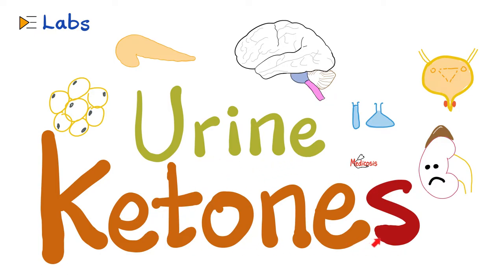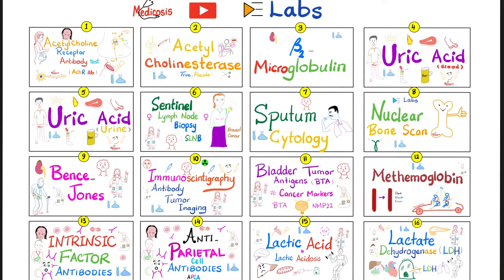What are the ketone bodies that you know? Acetone, acetoacetic acid, and beta-hydroxybutyric acid. Notice these are acids. Do we normally see urine ketones? No — normally there should be no ketone bodies in your urine, but when we see them, this could be a sign of a disease.